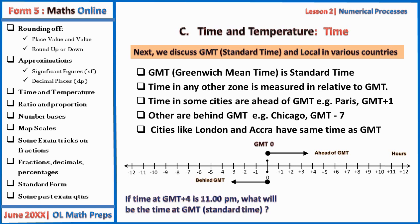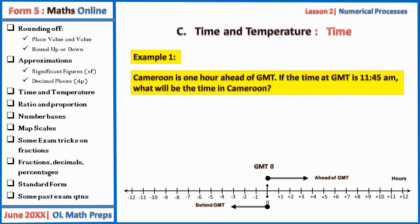If time at GMT+4 is 11 pm, what would be the time at GMT? To move back from GMT+4 to GMT, we subtract four hours from 11 pm, giving us 7 pm. Let's take another example: Cameroon is one hour ahead of GMT. If the time at GMT is 11:45 am, what will be the time in Cameroon? Since Cameroon is GMT+1, we add one hour to 11:45 am, giving us 12:45 pm.